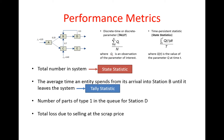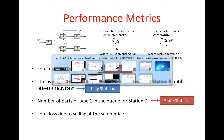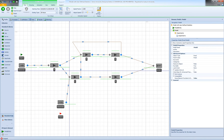Let's look at our third performance metric, which is the number of parts of type 1 in the queue at station D. Similar to number in system or number in queue, this metric is also a time-dependent metric, so we need to track the number of parts of type 1 in the queue at station D over time. For this particular performance metric we need a state statistic, so let's go back to our Simio model.